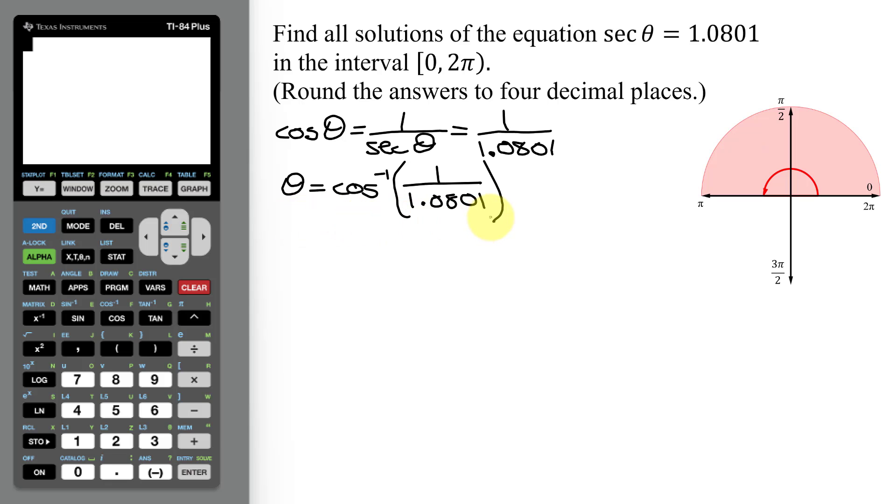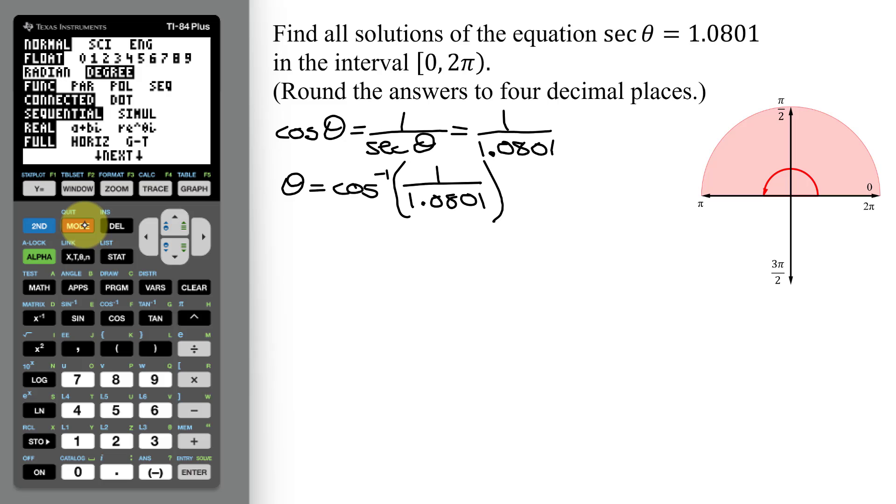So now I need to put this in my calculator, but before I do that, I need to check the mode. It is in degrees, so I need to scroll down until radians is flashing. Hit enter. Now the calculator is in radians. I need to quit, so that's second mode.